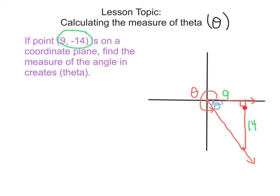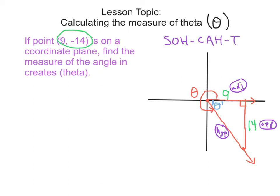To find the measure of theta prime, we use the opposite side and the adjacent side. From angle theta prime: the hypotenuse is the terminal side, the opposite side is 14, and the adjacent side is 9. Using SOHCAHTOA, opposite and adjacent are in the tangent ratio. So: tangent of theta prime equals opposite over adjacent, which is 14 over 9.